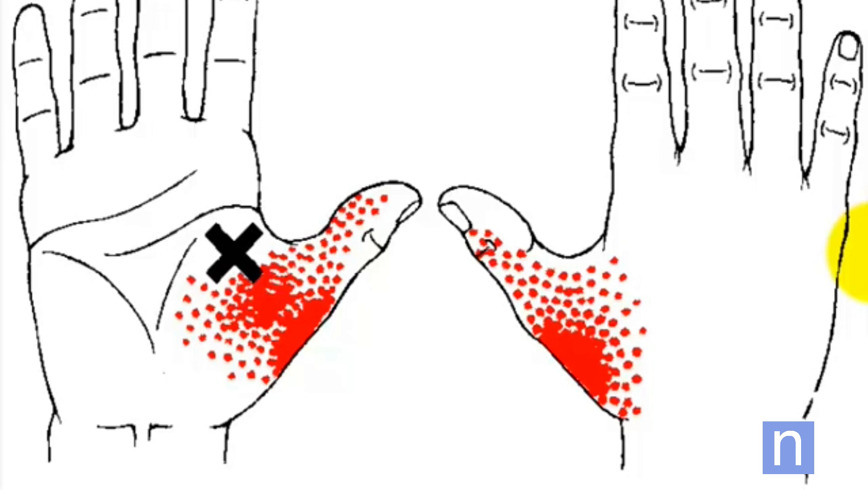And this is the pain distribution from the trigger point in the adductor pollicis. And again, the trigger itself is often exquisitely tender, but it tends to refer pain in a vague pattern out over the thenar eminence in the palm of the hand, and then spread around the thumb onto the dorsal side of the thumb as well.